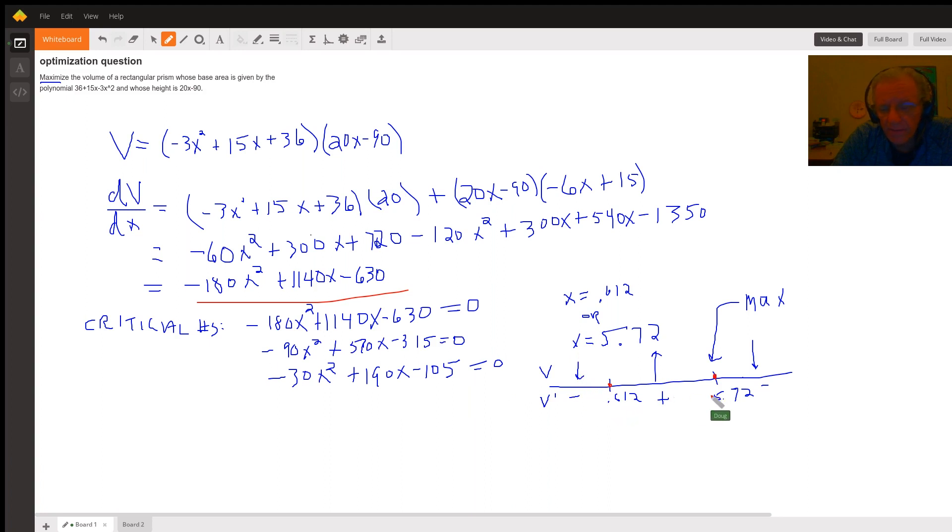Between these two critical numbers, like if I put a one in here, I get a positive value. That tells me that this critical number produces a minimum volume.